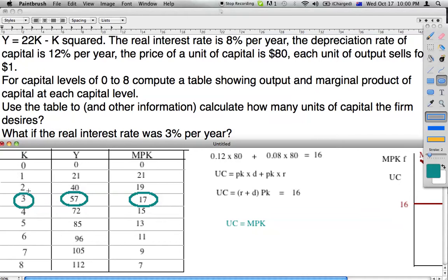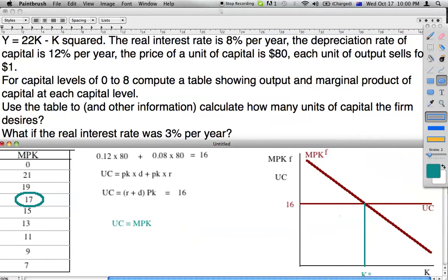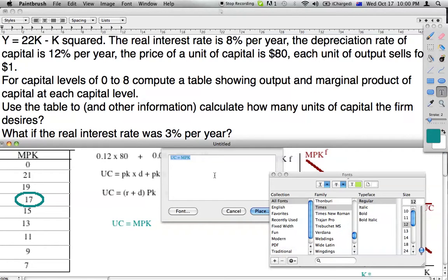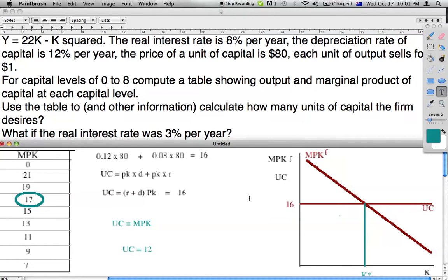For the first question we have three units of capital. Now, what if the real interest rate was 3%? If we look at what determines the user cost curve, it is R plus D times PK, so we are decreasing the interest rate. If we decrease the interest rate to 3%, our new user cost of capital will equal 3% plus 12% times 80, which equals 12.